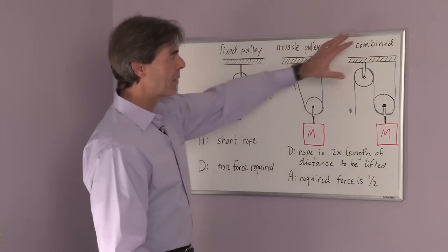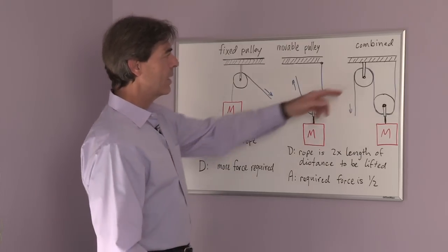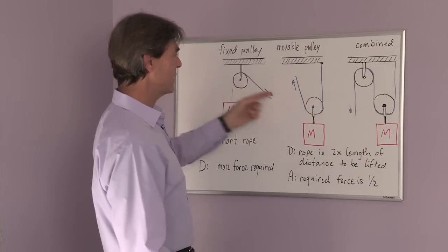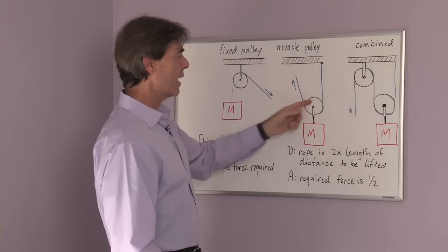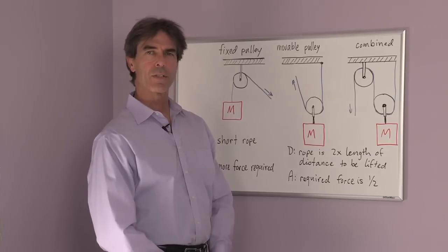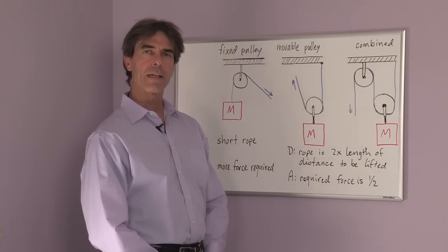In the case of the combined movable and fixed pulley, you have a little bit more friction in this case. So in these two cases, you have the friction of one pulley. Here, you now have the friction of two pulleys. So you need a little bit of extra force to overcome the frictional force.